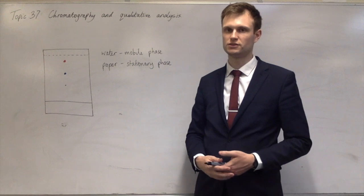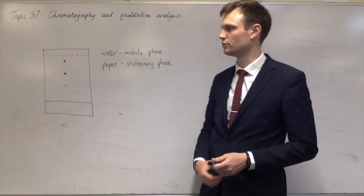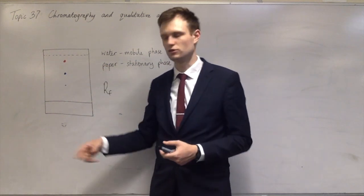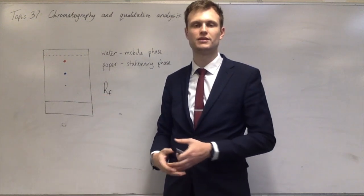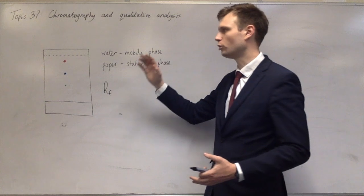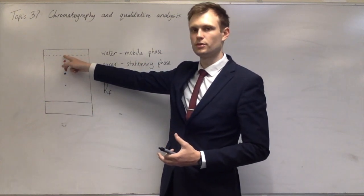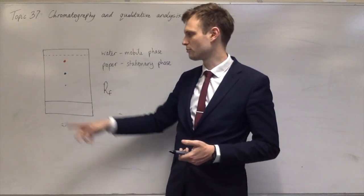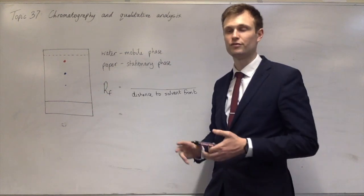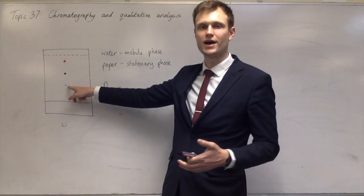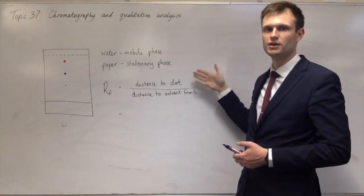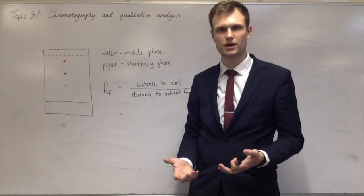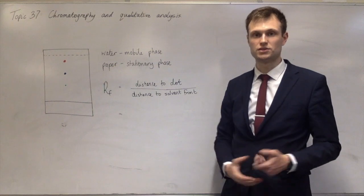There's one thing we need to talk about that you don't do in year 7, and that is the RF value. The RF value is the fraction of the way up the paper, or up to the solvent front, that the ink made it. The highest each ink could get would be right to the top — as far as the water went — meaning it's completely soluble in water and not at all absorbed onto the stationary phase. The minimum is that it doesn't move at all. We measure the distance to the solvent front and how far the dot actually got, and we calculate a fraction of how far the dot got compared to how far it could have gone. So the green one might be a third of the way up, the blue two-thirds, and the red 90% of the way up. You give that as a fraction, decimal, or percentage — they're all the same thing.